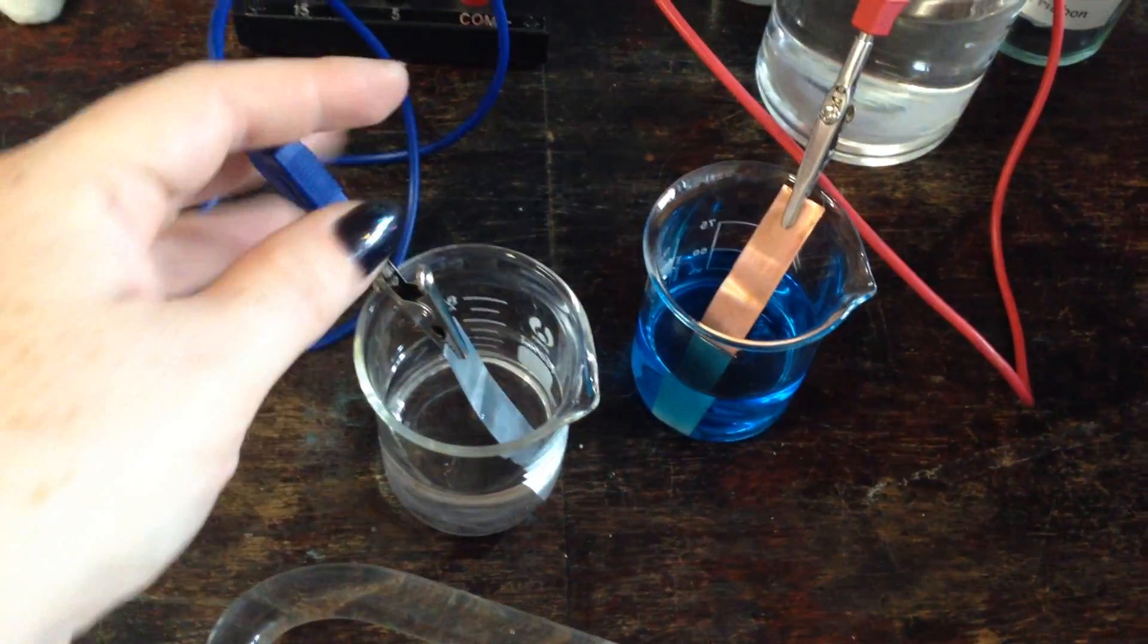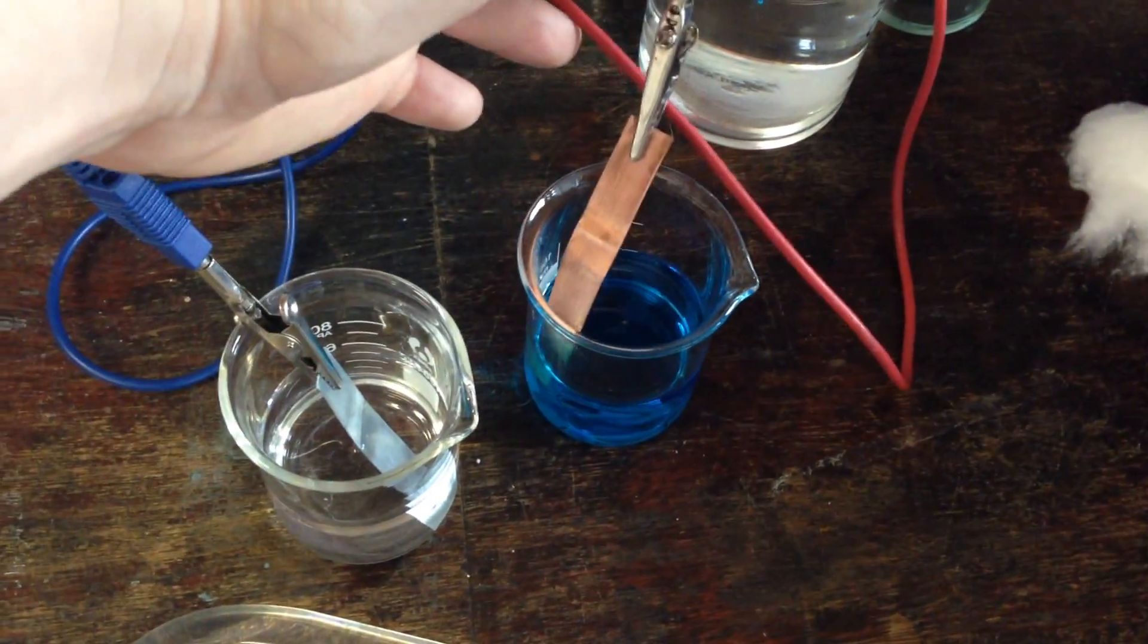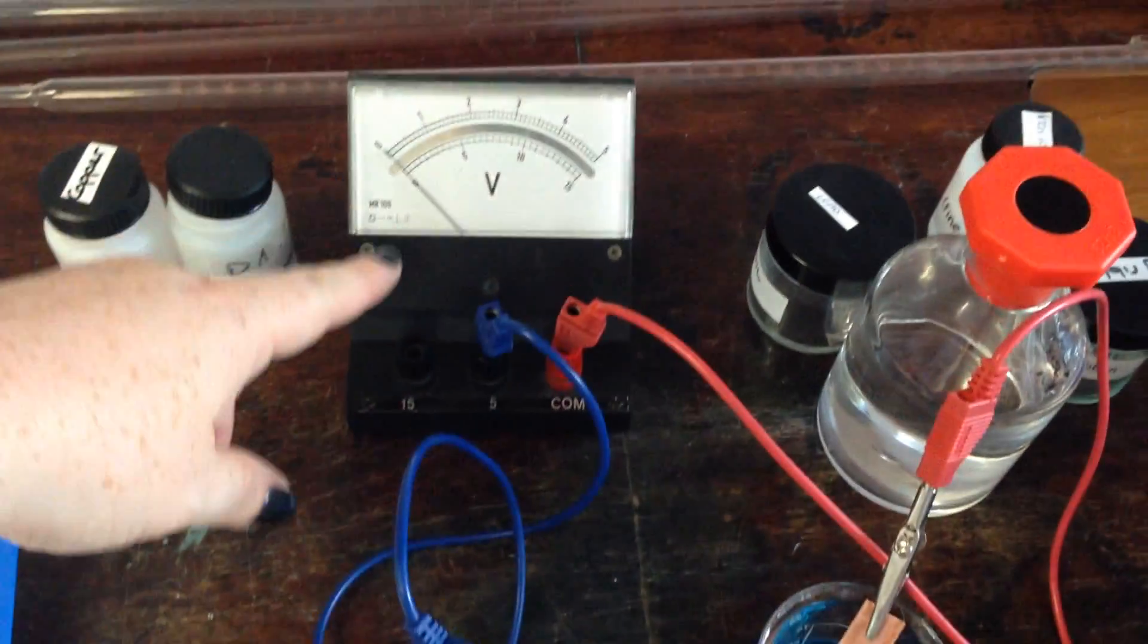So here we're setting up an electrochemical cell. Here I have a sample of zinc in zinc sulfate solution. Here is a sample of copper in copper sulfate solution. They are connected up to a volt meter at the back.